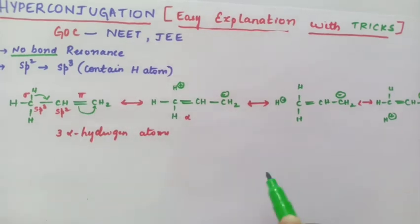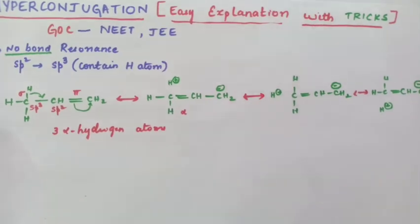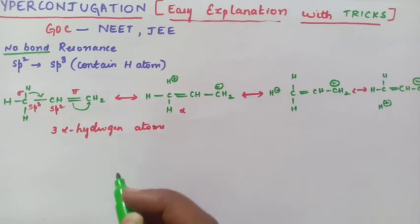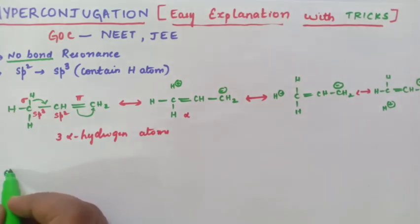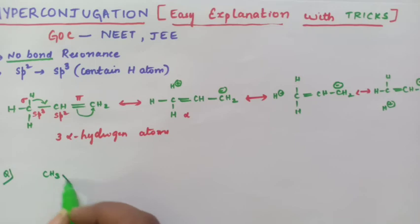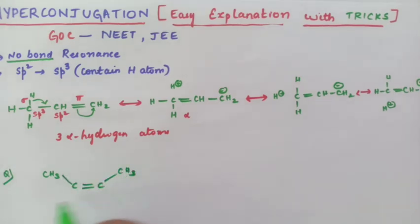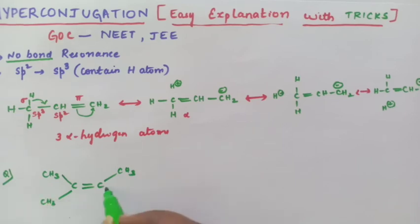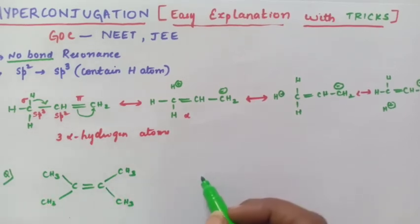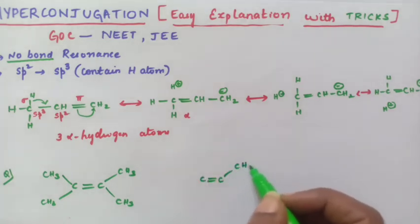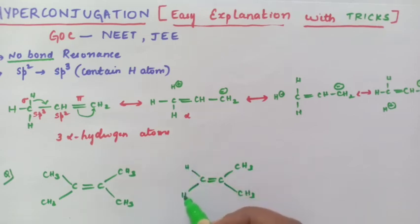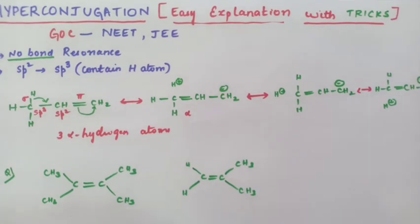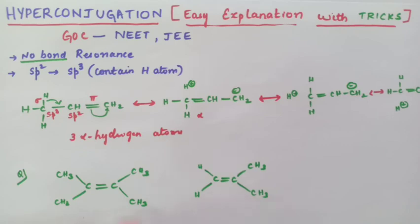Now let us see the stability of hyperconjugating structures and compare which is more stable. Suppose a question is given to you: compare molecule one — CH3-C double bond C with CH3, CH3, CH3 on both sides — with molecule two — C double bond C with CH3, CH3 on one side and hydrogen, hydrogen on the other side. If these two molecules are given for comparison and you want to find out which is more stable.